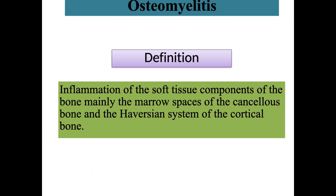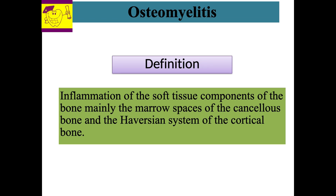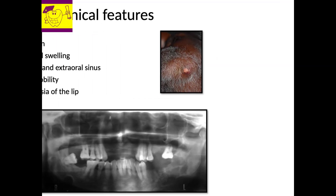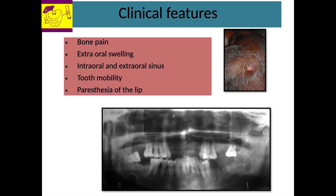Another possibility which can occur as a sequelae of pulpal and periapical infection is the inflammation of the soft tissue components of the bone, which is called osteomyelitis. Clinical features of osteomyelitis include intraoral or extraoral swelling, severe bone pain, mobility of the involved tooth, draining sinuses, and paresthesia of the lips. Radiographically, it shows an altered trabecular pattern, presence of involucrum, sequestrum, and moth-eaten appearance.